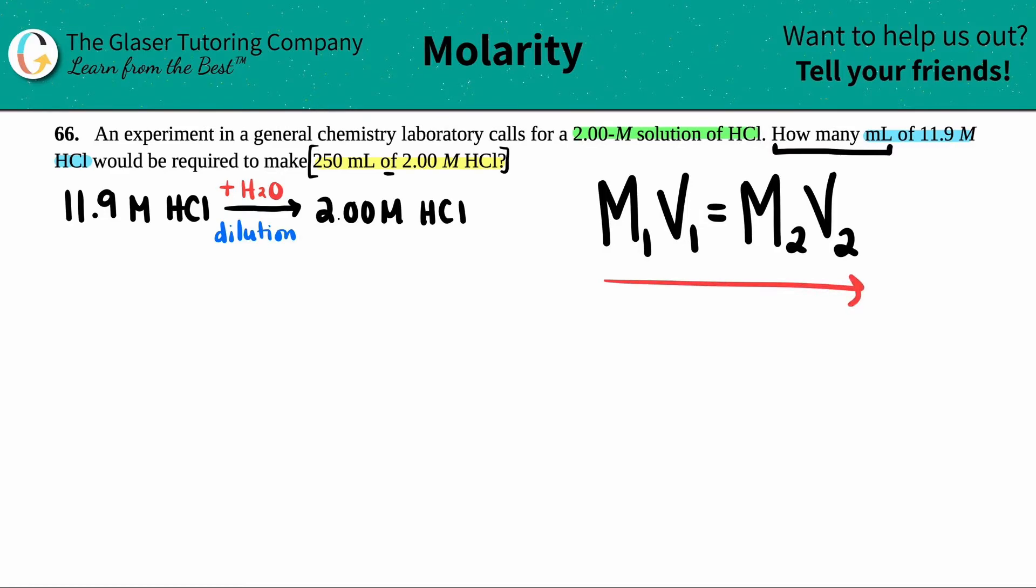Usually I like to work from left to right, but let's go backwards. I just want to show you that it doesn't matter where you put it, you're still going to get the same answer. So I'm going to put my units on this side. I'm going to say that this molarity is 2.00 and that that volume is 250 mils.